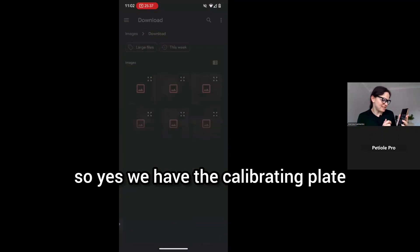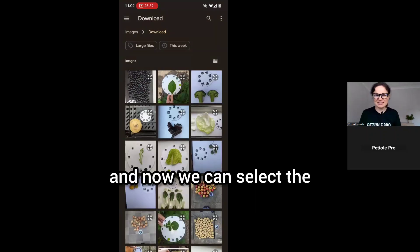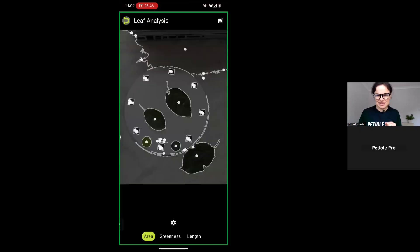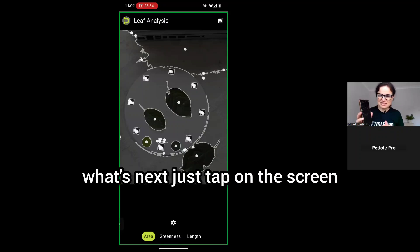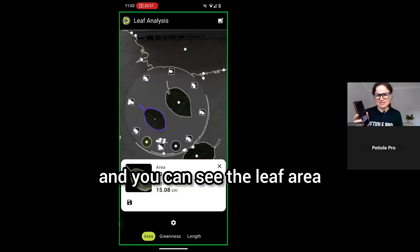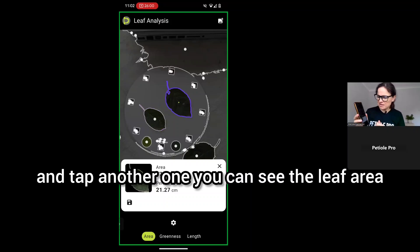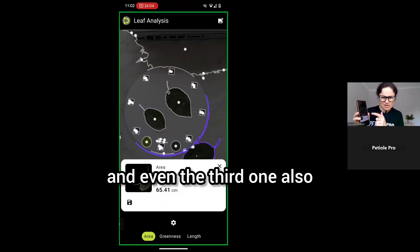Yes, we have the calibrating plate. Now we can select the images. Now we can see the images. I have selected this one which we have just captured. What's next? Just tap on the screen and you can see the leaf area. Tap another one, you can see the leaf area, and even the third one.